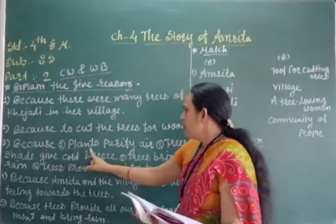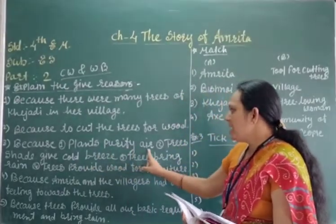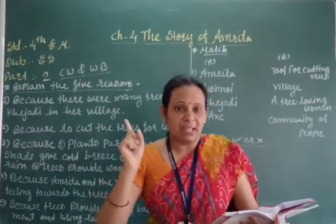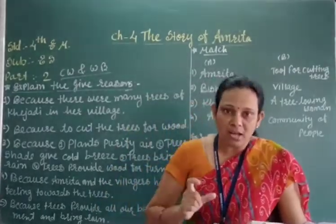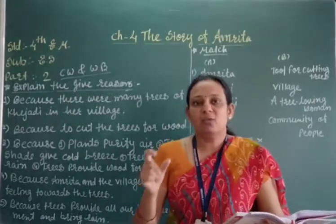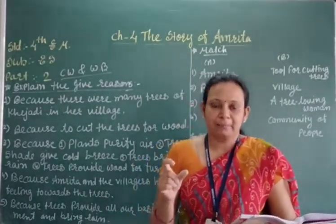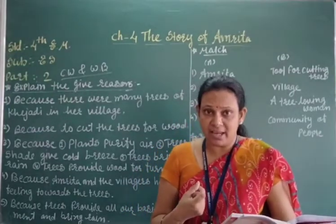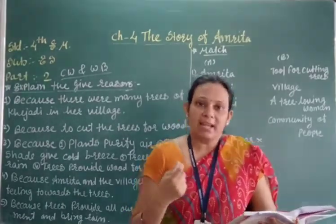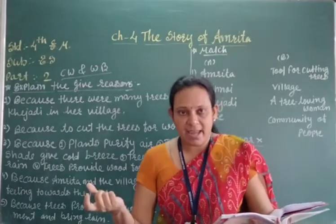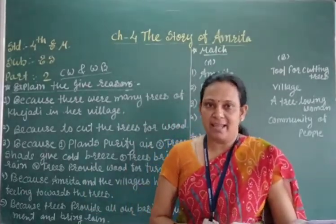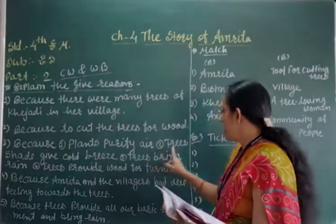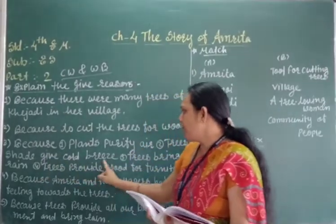First number: plants purify air. What do the plants do? They purify our air — absorbing carbon dioxide and releasing oxygen. So trees purify air. Second number: trees give cold breeze, which is very useful in the summer season.